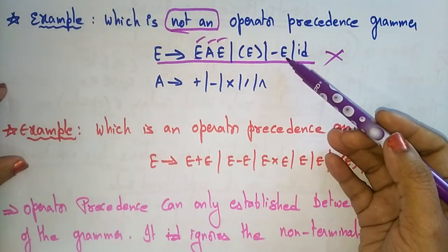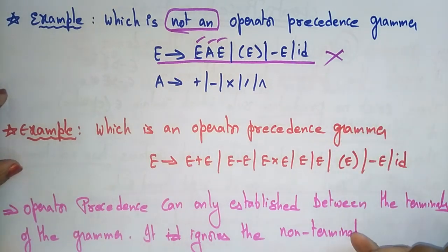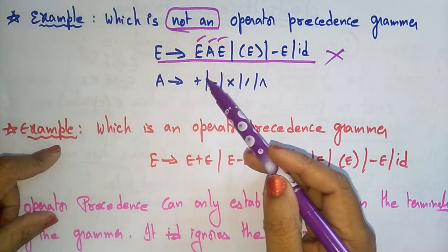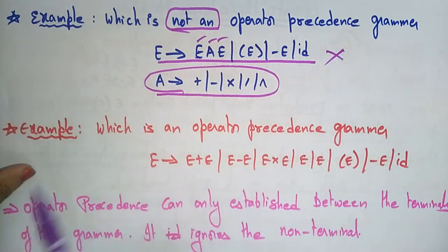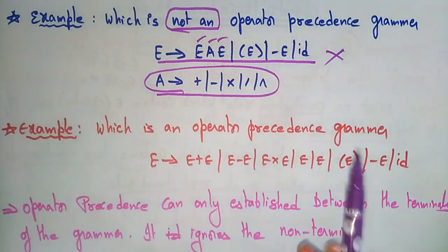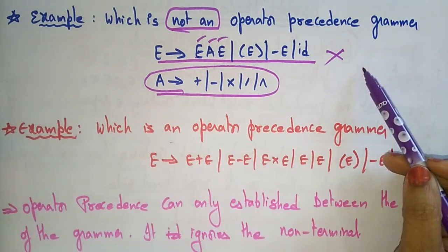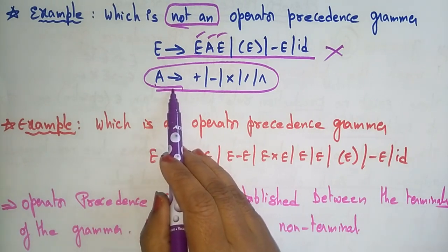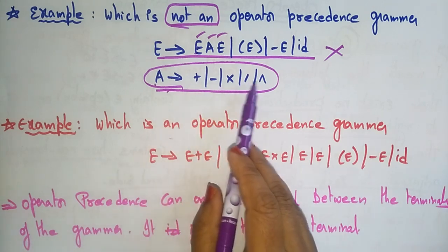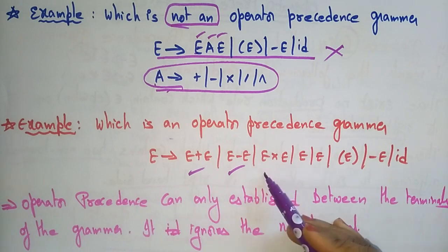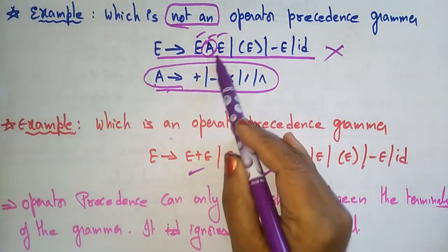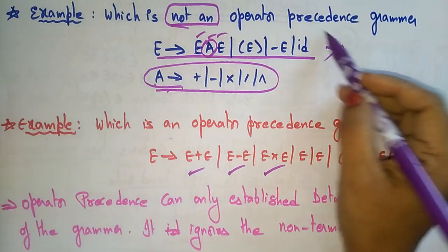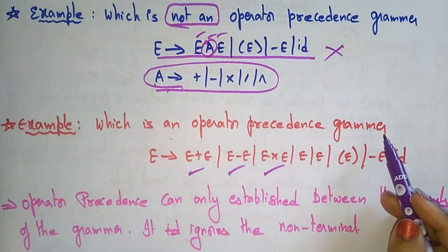To convert a non-operator precedence grammar into an operator precedence grammar, we substitute the non-terminals. By substituting terminals in place of A — such as plus, minus, multiply, divide — you get: E → E plus E, E minus E, E into E, and id. This converts the grammar into an operator precedence grammar.